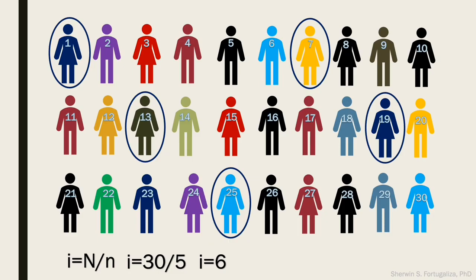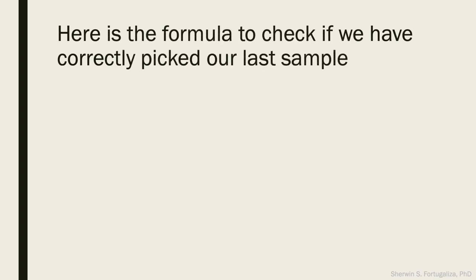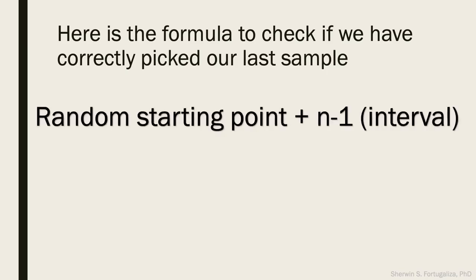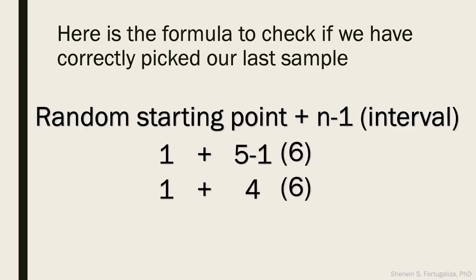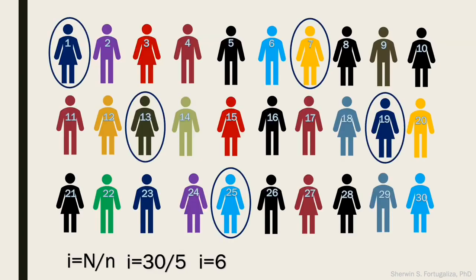The blue circled individuals are the chosen samples. Here is the formula to check if we have correctly picked our last sample: random starting point plus (n minus 1) times the sampling interval. In our example, 1 plus (5 minus 1) times 6: 4 times 6 is 24, plus 1 is 25. Correct! The 25th individual was the last chosen sample.